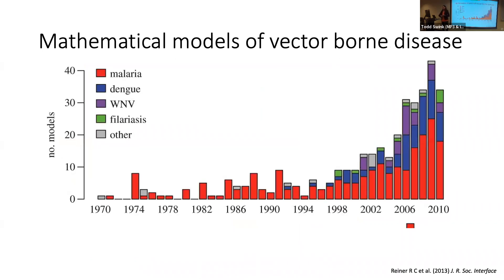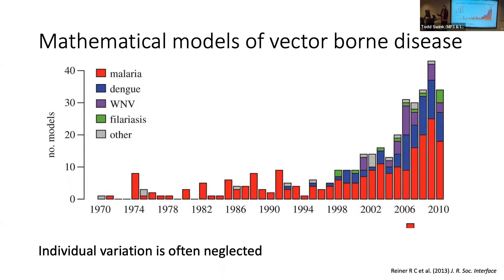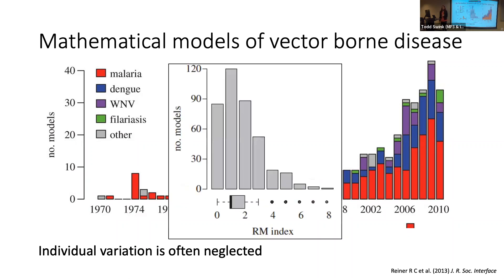A paper about a decade ago looked at all malaria mathematical models from 1970 to 2010 and noted a proliferation of papers, but also that a lot of individual variation is still neglected. One thing they created was the Ross-McDonald index — how many assumptions of the original model did you actually change in the papers? The mode was at one, meaning most papers only changed one assumption, showing there's still a lot of variation that can be built in.